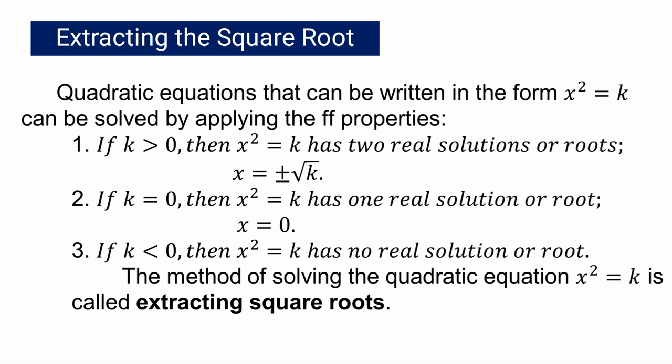Property 3: If k is less than 0, then x squared equals k has no real solution or root. The method of solving the quadratic equation x squared equals k is called extracting the square root.